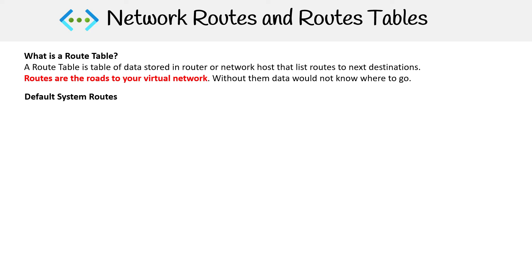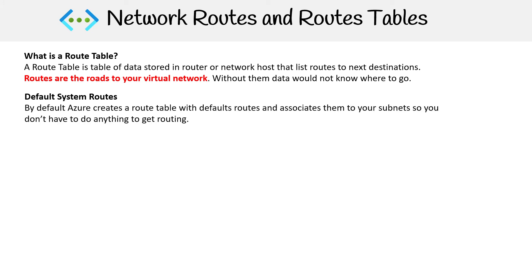One thing that confused me — because I'm from AWS — is that when I used Azure and launched a virtual machine, it was reaching the internet, but I couldn't find a route table for it. I was confused about how it knew how to reach the internet. The reason is that Azure has some system default routes, and they already had a route to the internet that was associated with my subnet.